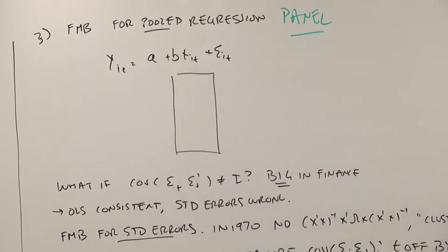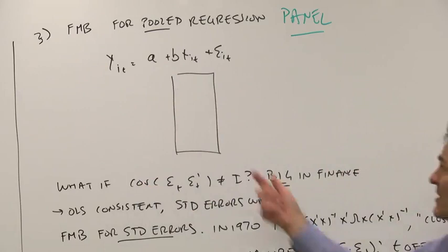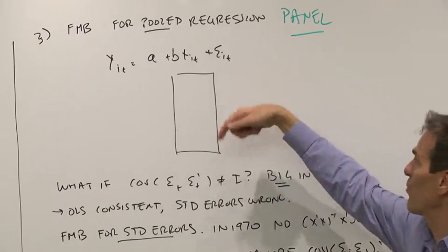Now, in running a panel regression of this sort, the main problem, we know how to run the regression, the problem is what if the error terms are not independent of each other? And the error terms are almost always not independent of each other. If one firm is lucky, the neighboring firm is likely to be lucky as well. So you have to correct for the correlation of the error terms.